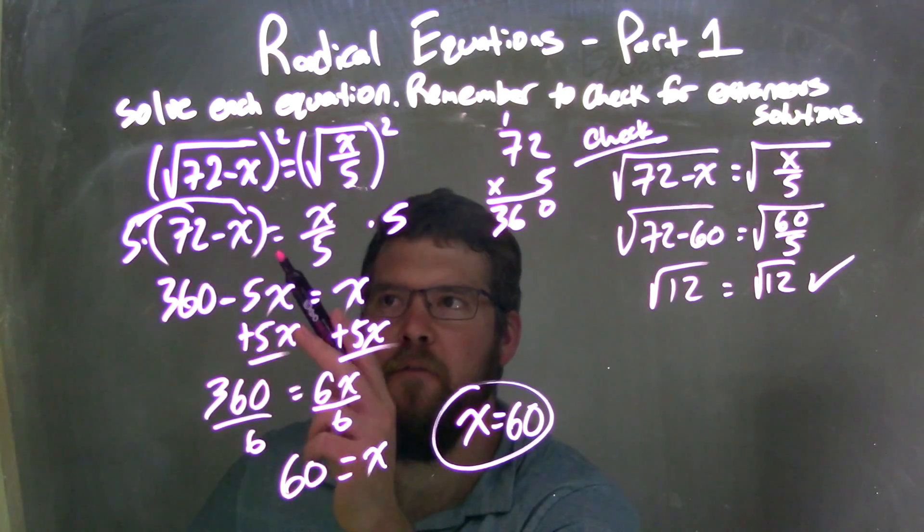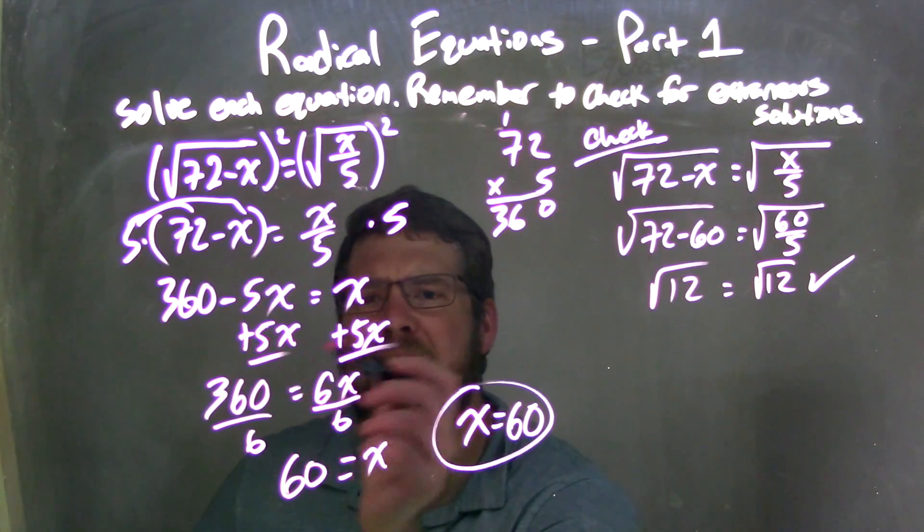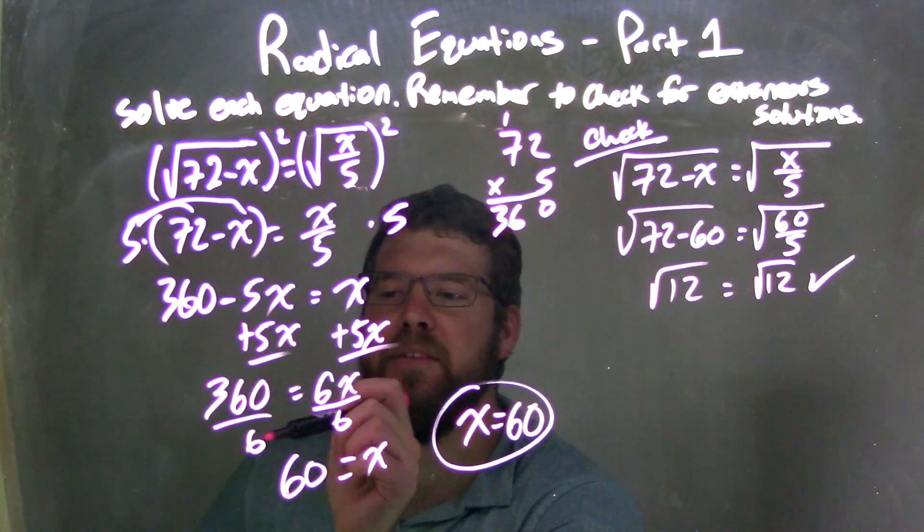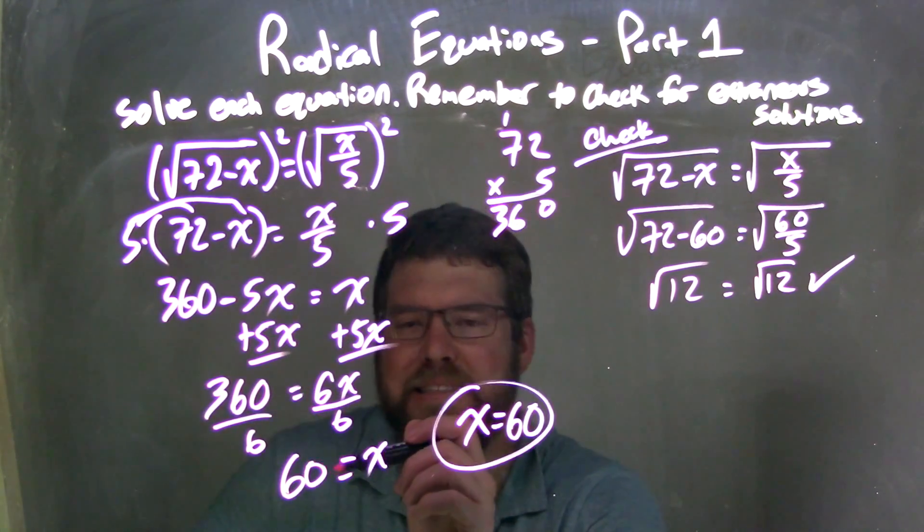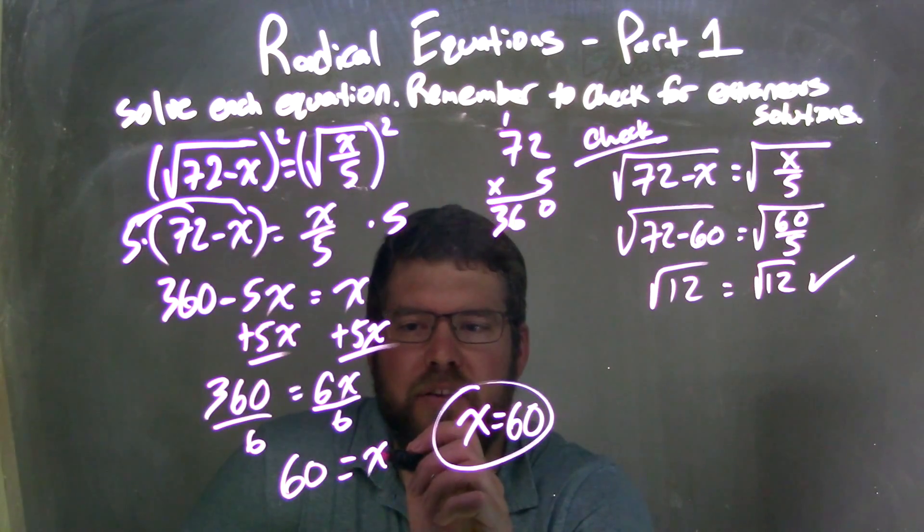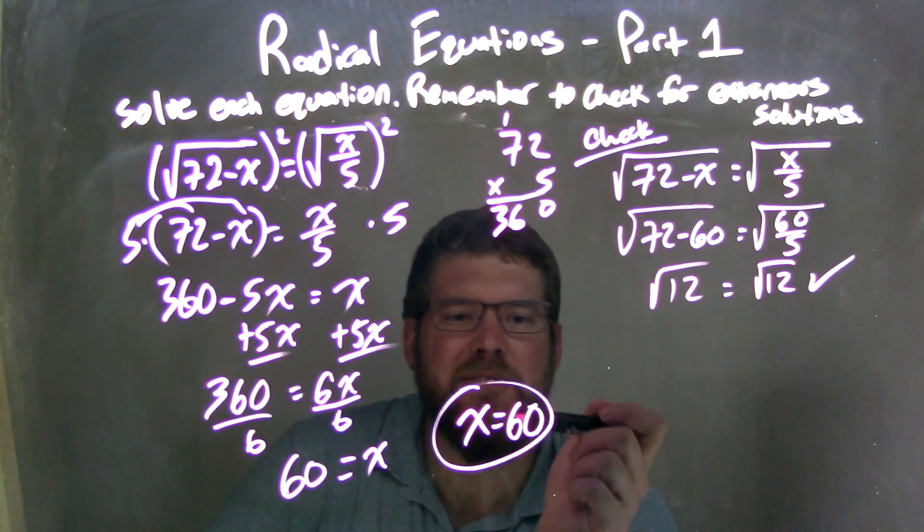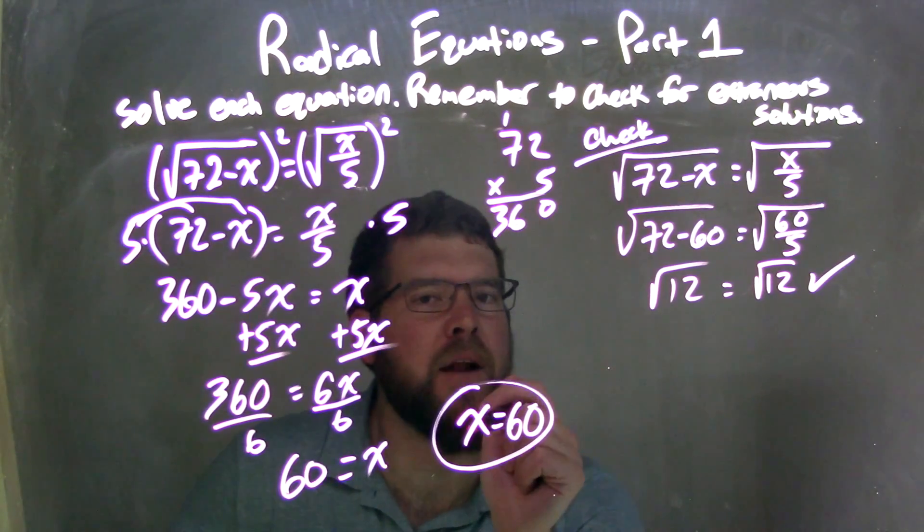Remember, distribute that 5, multiply it to both parts there. And then add a 5x to both sides. Leaving me with 360 equals 6x. Divided by 6. 360 divided by 6 is 60 equals just that x left on the right. Rewrite it to have x come first. So x equals 60. I'm pretty confident is my final answer.